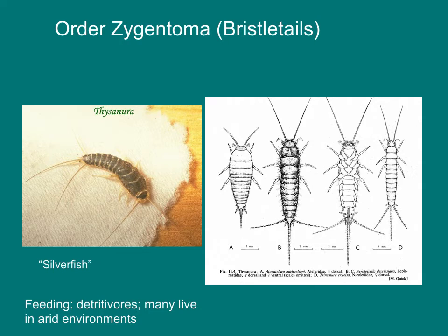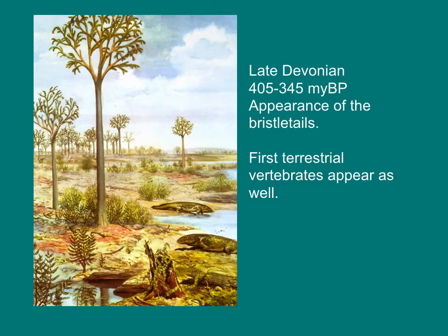Another early wingless lineage are the bristletails. These small, flat insects live in soil, leaf litter, and under stones. There are some that have adapted to extremely dry environments — they are likely living under your refrigerator. Bristletails likely appeared in the late Devonian. This is also the period when the first terrestrial vertebrates appeared on Earth.